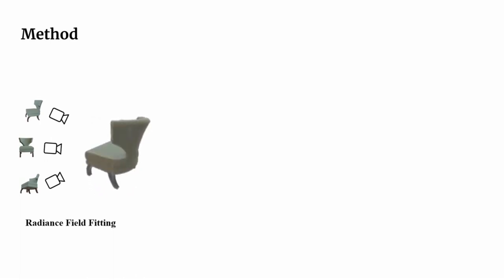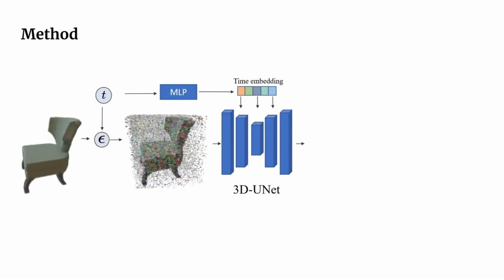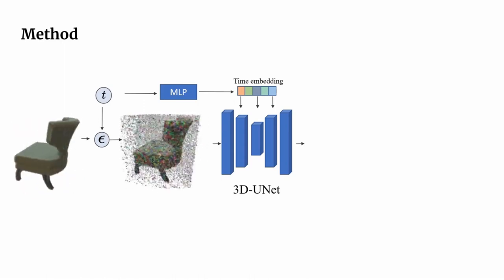During training, our model takes as input a radiance field generated from a set of posed images. Similar to 2D diffusion, we train a time-conditioned 3D U-Net to reverse a Gaussian noising process, which corrupts the input radiance field over time.